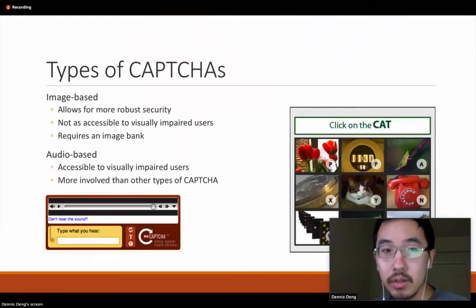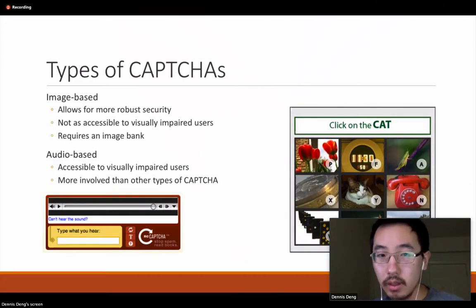The other two types are image-based and audio-based CAPTCHAs. Image-based allows for really robust security, but it's not as accessible, obviously, to visually impaired users and requires an image bank, which adds overhead to the system and could potentially be another failure point. Audio-based is technically the least used, but it's accessible to almost all visually impaired users. And it's more involved than other forms of CAPTCHA, so it's somewhat used as a backup. So more conventional CAPTCHAs typically give you an image or text, and they say you can have an option to hear it as audio.